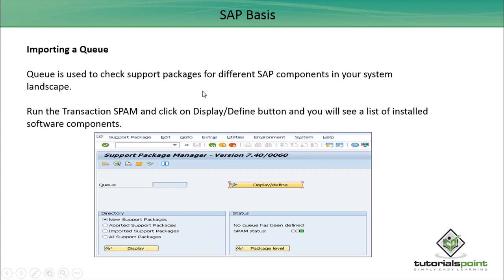To import a queue, you have to run the transaction SPAM. Once you run the transaction, it takes you to the support package manager screen. Once you click on the display and define button, if you have the queues defined, you will see a list of installed software components.